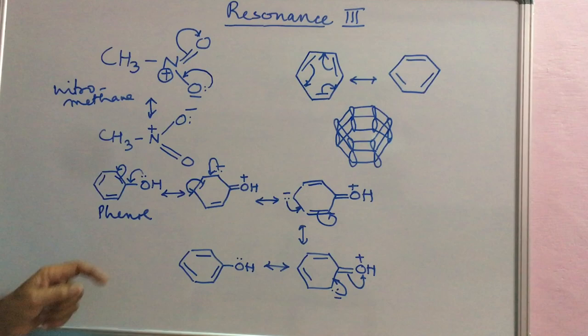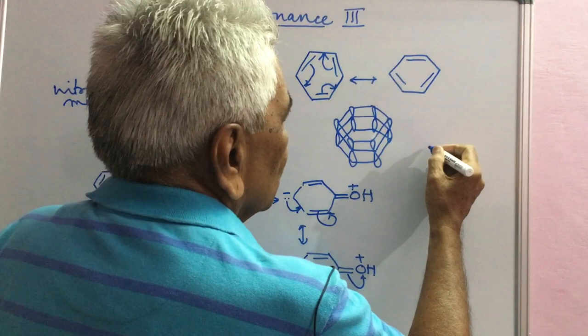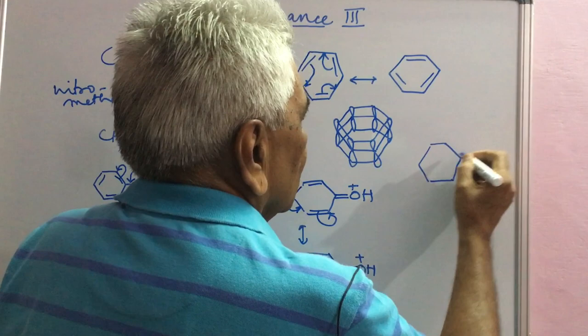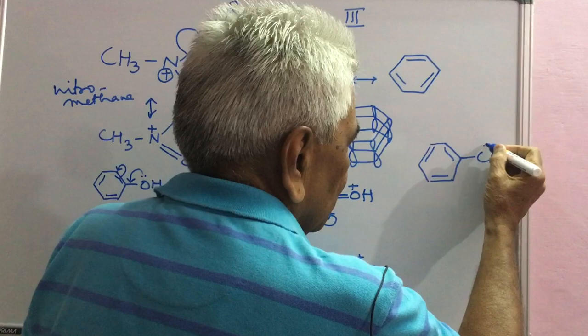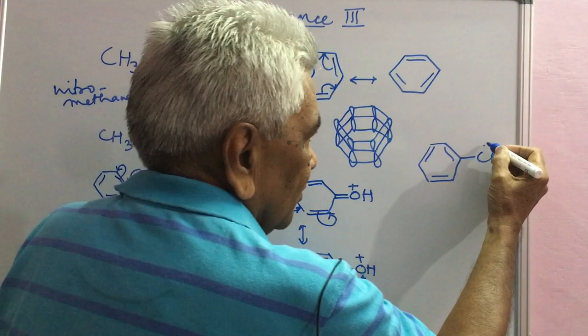We can draw similar structures for, say, chlorobenzene. Cl has got electron pair in pi-orbital. This situation, ready for resonance. This coming here. This coming here. And this coming here.